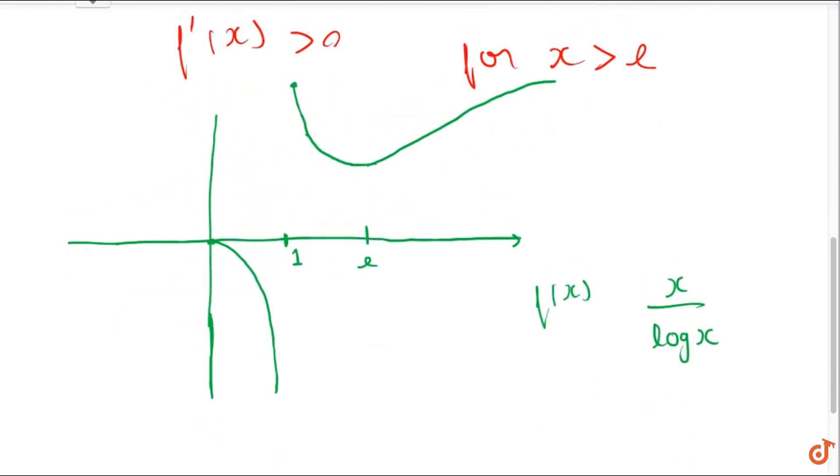This is the graph of the function. It is discontinuous at point x equal to 1. So it is strictly decreasing in x belongs to 0 to 1, then strictly decreasing in x belongs to 1 to e, and then strictly increasing in e to infinity.